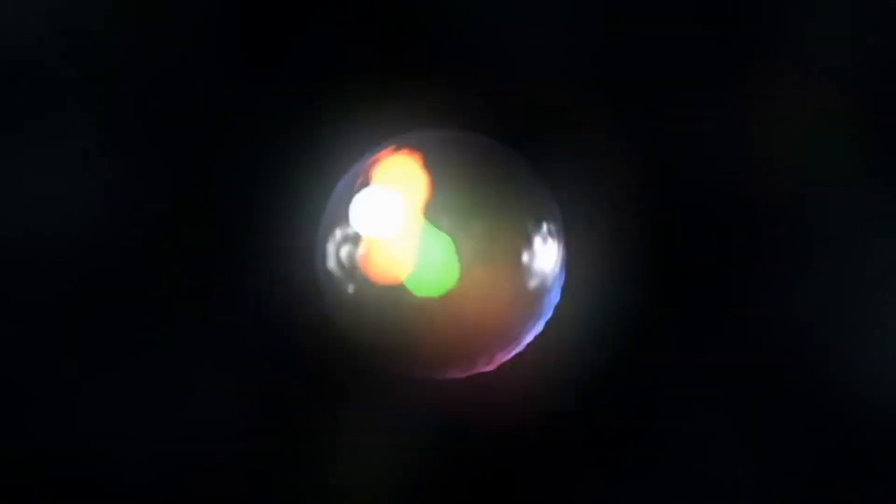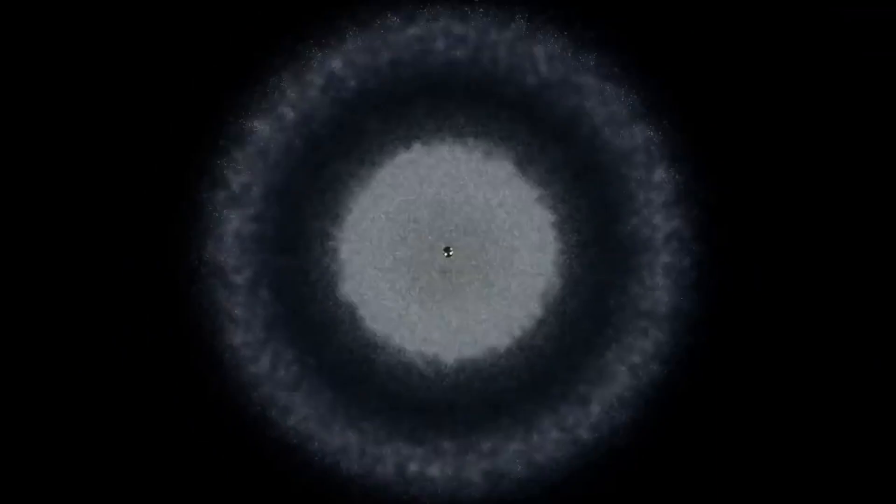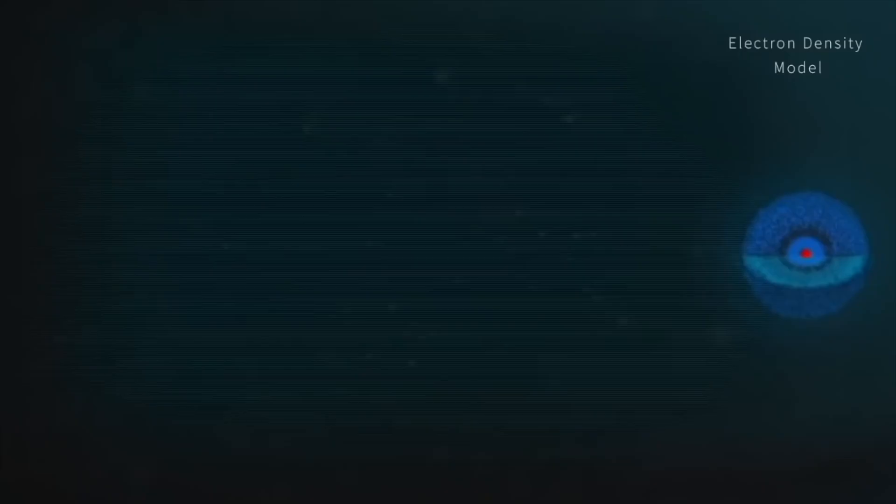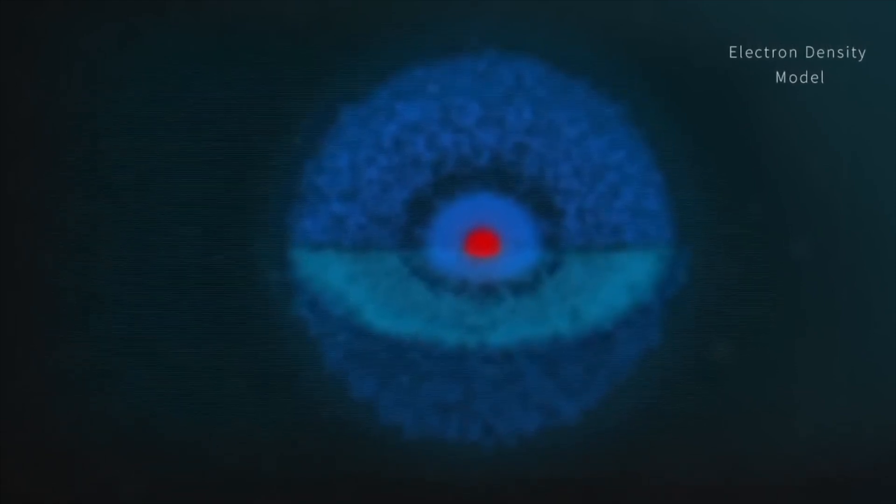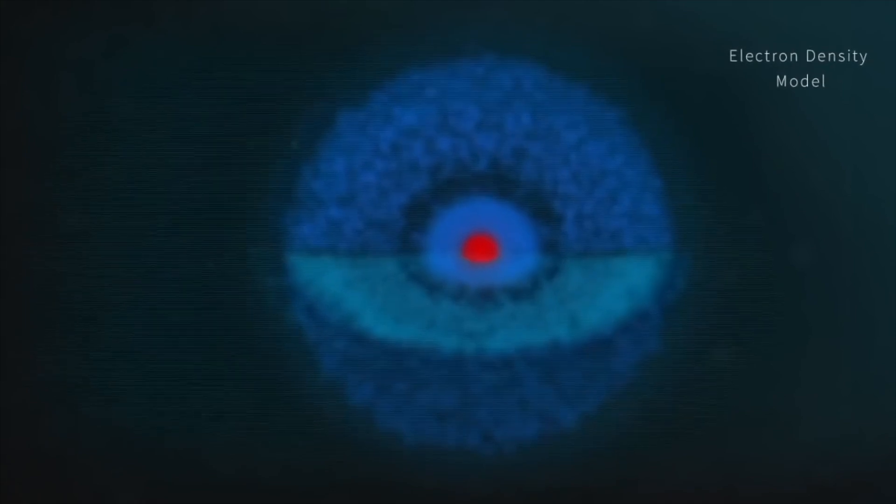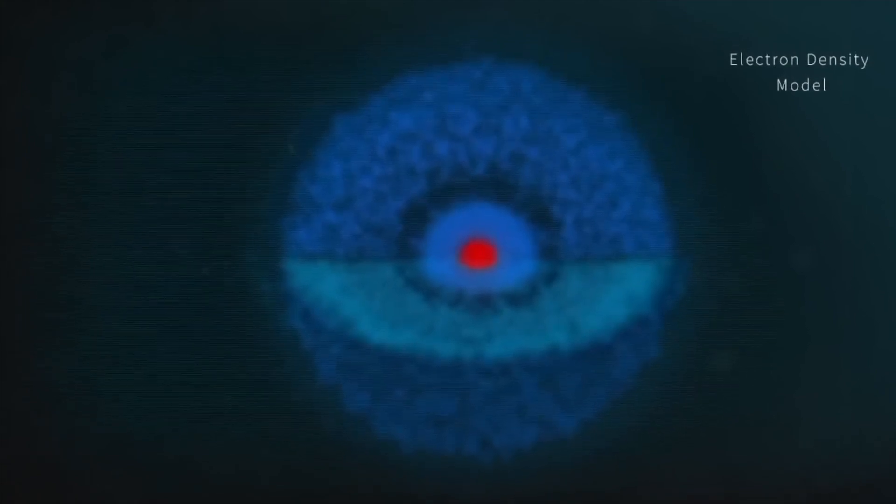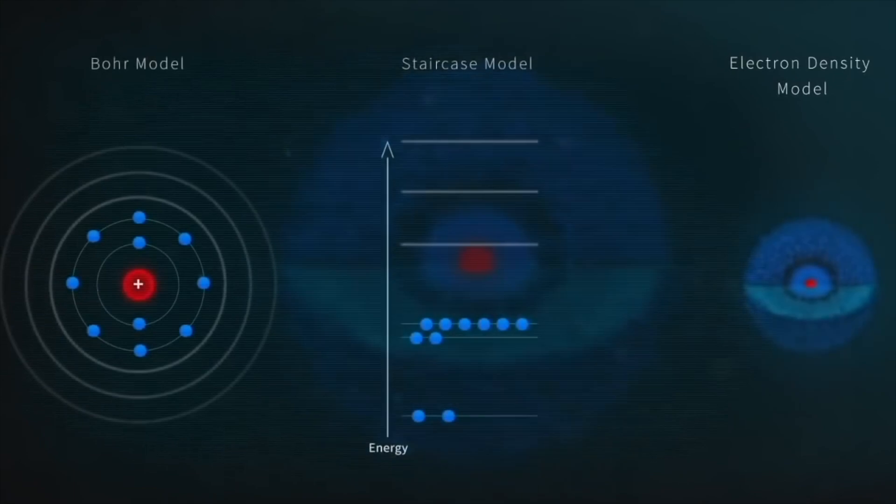Imagine a hydrogen atom. It's mainly a positive nucleus surrounded by a field of negative energy that we call an electron. There's no single electron particle, more a probability, a negative state of charge hovering above the nucleus. But that strays into the weird world of quantum physics.